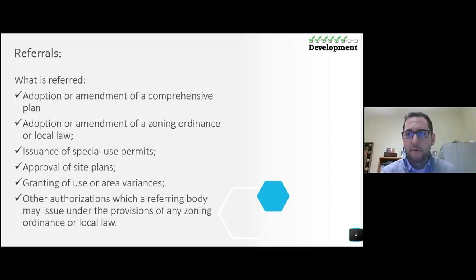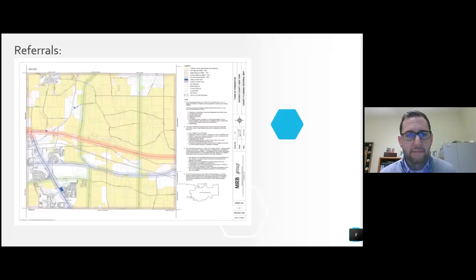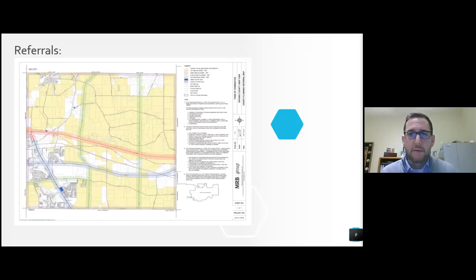Referrals — when is an application subject to referral requirements? Adoption or amendment of a comprehensive plan, adoption or amendment of a zoning ordinance or local law, issuance of special use permits, approval of site plans, granting of use or area variances, and other authorizations under provisions of any zoning ordinance all have a referral requirement associated with them. This map — I know it's a little hard to see — is a county referral map we created for a community. It shows the 500-foot from a property line or neighboring community boundary, and 100 feet off a state or county road. It gives a visual representation so that when staff get an application and identify the address on this map, they know it has to go to the county.